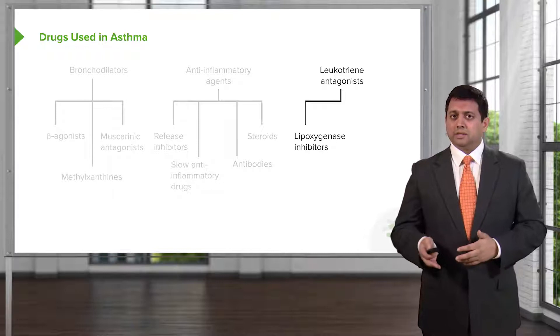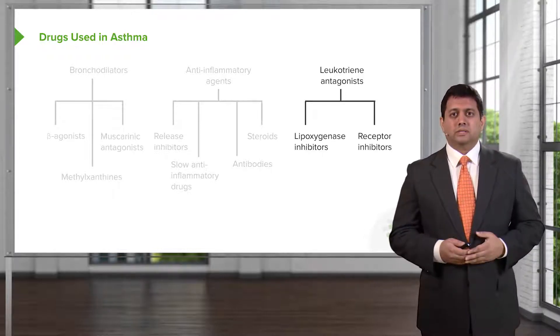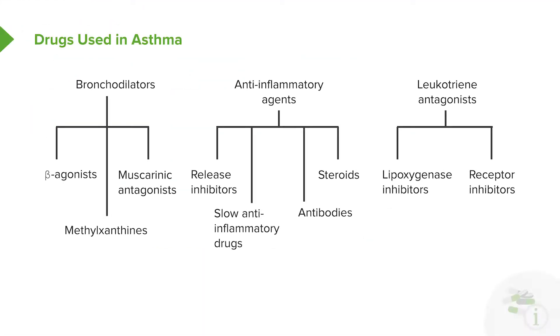They can be lipo-oxygenase inhibitors, or they can be receptor inhibitors. These drug classes represent the entire armamentarium in asthma, and we're going to go over each of them in turn.